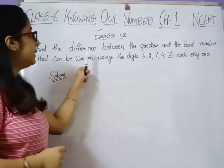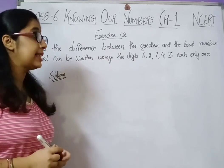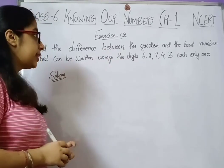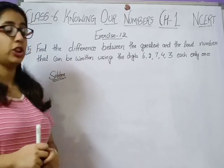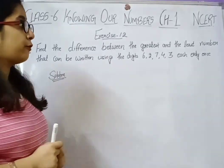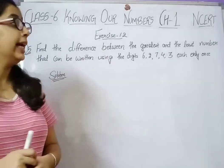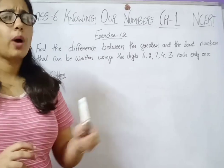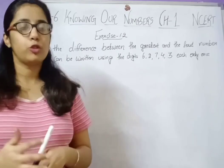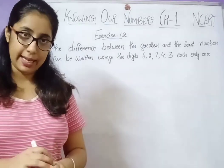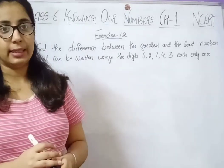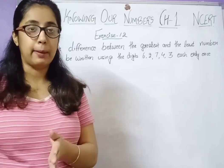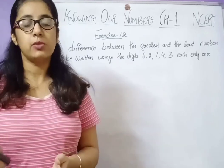Question number 5 says: find the difference between the greatest and the least number that can be written using the digits 6, 2, 7, 4, and 3, each only once. You have to build up two numbers — the greatest number and the least number — and then find the difference between them.